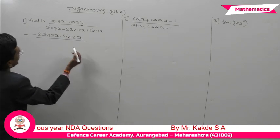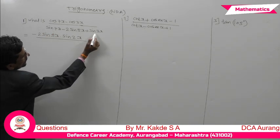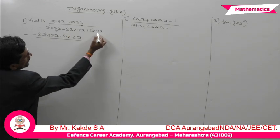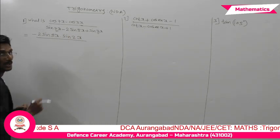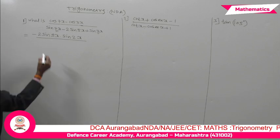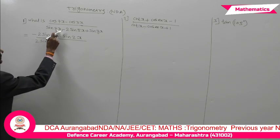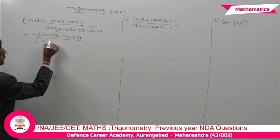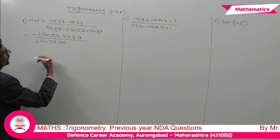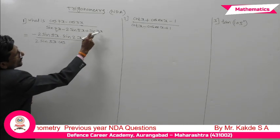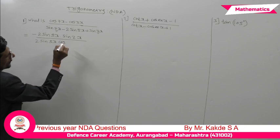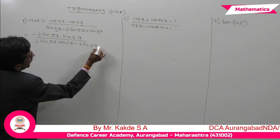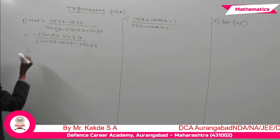For the denominator, consider sin7x and sin3x using the sin C plus sin D formula, with C as 7x and D as 3x. The transformation formula gives 2 times sin((C+D)/2) into cos((C-D)/2), that is 2 sin5x into cos2x. The denominator becomes 2sin5x·cos2x minus 2sin5x.